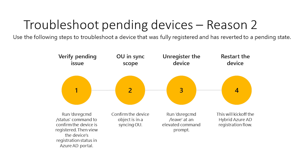Let's discuss reason two: how to troubleshoot scenarios in which your devices fail to complete registration with Azure AD due to previous registration status or organizational unit changes in Azure AD Connect. First, verify the device's pending status in the device blade registration status details in Azure AD. Confirm the device object is in an organizational unit within sync scope. Then run dsregcmd /leave via an elevated command prompt and reboot the device to reinitiate the hybrid Azure AD join procedure.